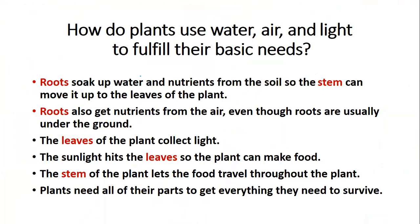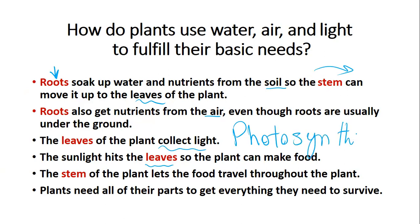The roots soak up water and nutrients from the soil, so the stem can move it up to the leaves of the plant. Roots also get nutrients from the air, even though roots are usually under the ground. The leaves use sunlight so the plant can make food — do you remember the process? Yes, excellent — photosynthesis. The stem lets the food travel throughout the whole plant. Plants need all of their parts to get everything they need to survive.